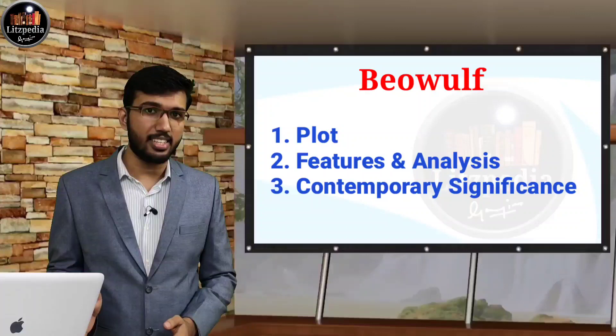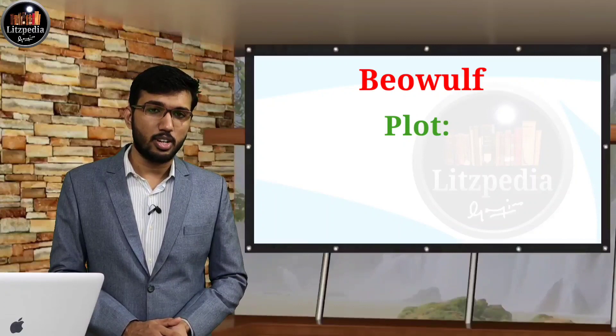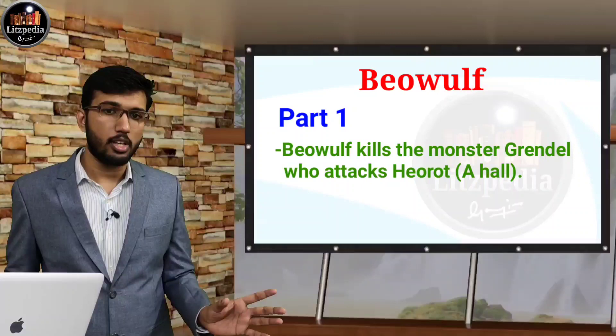Contemporary significance means in the modern world, after that, how these writers came to see this literary work. So let us start with the plot. Regarding plot, I would like to divide it into two sections. In the first part of Beowulf, the Geatish warrior Beowulf kills a monster called Grendel.